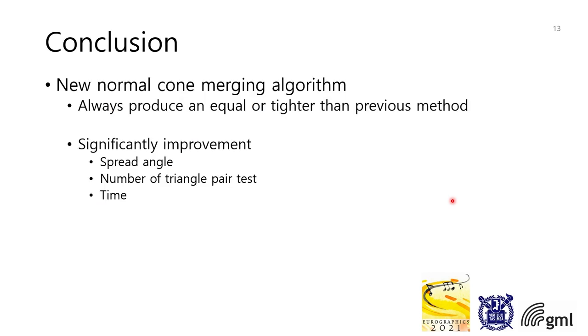Let's see the conclusion. In order to use normal cone-based culling, we found that the merging algorithm used when constructing the normal cone hierarchy produces an unnecessarily large result. So we propose a simple and efficient merging algorithm. The proposed method always produces an equal or tighter cone than the previous method.